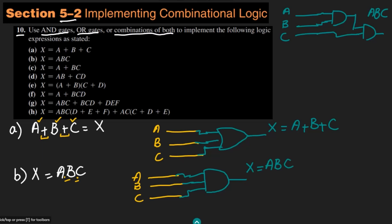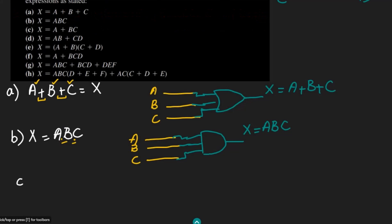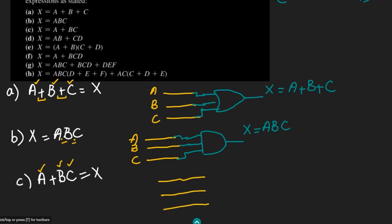Similarly, in part C we have a + bc = x. We have three inputs: a, b, and c. We can see that first b and c are multiplied together (AND operation), and then the result is added with a (OR operation). So we will have two gates here: an AND gate and an OR gate.